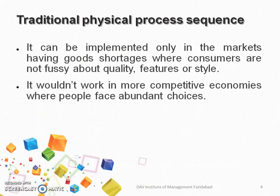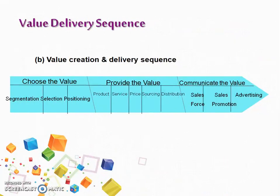This kind of traditional physical process sequence can be followed only in markets having good shortages, where consumers are not fussy about quality, features, or styles, and options are very few. But it would not work in more competitive economies where people face abundant choices and want certain values which are better than others.